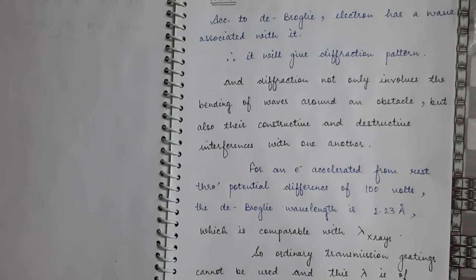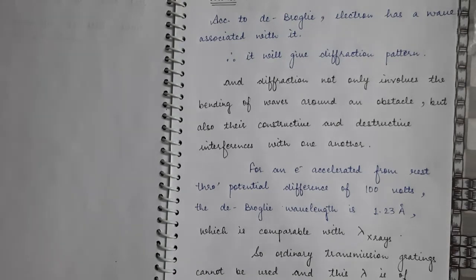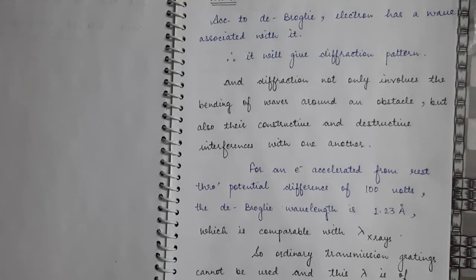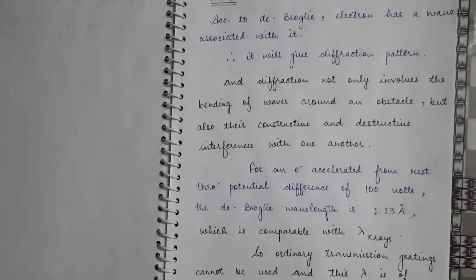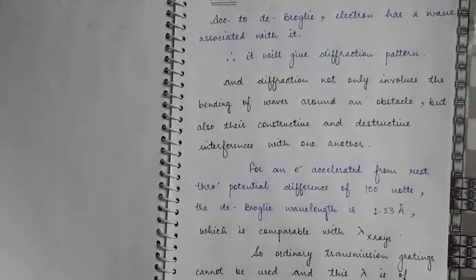This small wavelength is comparable to the wavelength of X-rays. To study the diffraction of X-rays, we cannot use ordinary grating, because for diffraction to take place the size of the obstacle or slit must be comparable to the wavelength. As the de Broglie wavelength of the electron beam is also very small and of the order of X-rays, ordinary diffraction grating cannot be used to study its diffraction pattern.